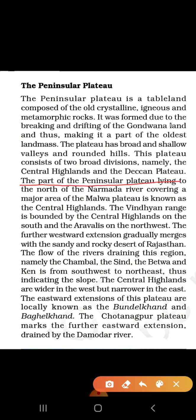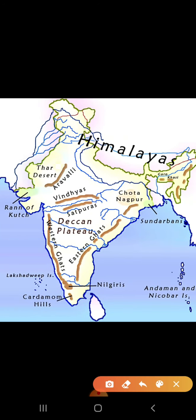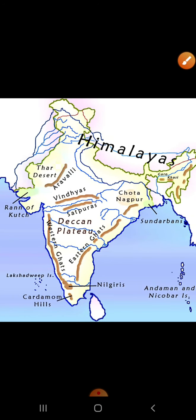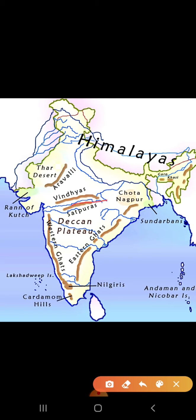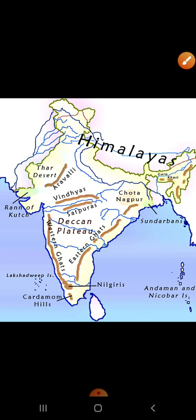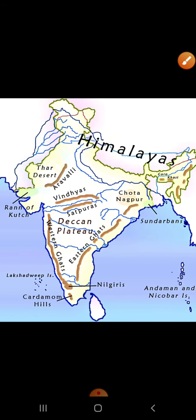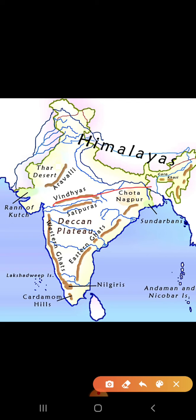The part of the peninsular plateau lying to the north of the Narmada river, covering a major area of the Malwa plateau, is known as the Central Highlands. Looking at the map, the Narmada river originates here and flows westward. The area to the north of the Narmada river, which mostly covers the Malwa plateau, is what we call the Central Highlands — roughly this entire part on the map.